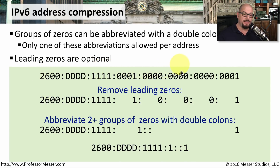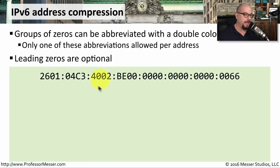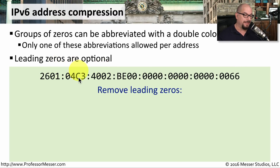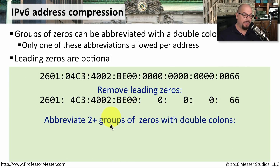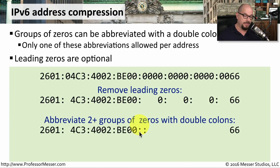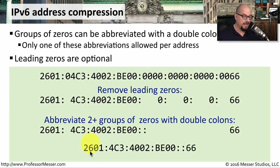We were able to take that very long IPv6 address and compress it down to something more manageable when working with routers and switches. Let's go through the compression process again with a different IPv6 address. First, remove any leading zeros. This address has a leading zero in the second group, a group of all zeros, and some leading zeros in the last group — we remove those, but not trailing zeros. A grouping like BE00 stays the same. Next, look for two or more consecutive zero groups — we have three — and replace them with a double colon, giving the final compressed address 2601:4C3:4002:BE00::66.